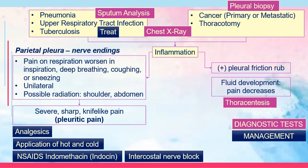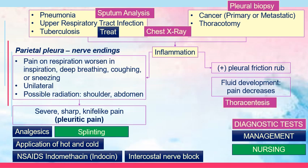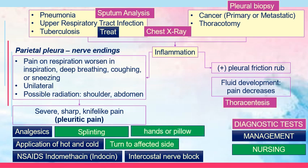Management includes treating underlying conditions such as pneumonia, respiratory tract infection, and tuberculosis so pleural inflammation resolves. Analgesics are given for pain. Application of hot and cold compress is recommended. NSAIDs such as indomethacin may help. Intercostal nerve block involves administering an anesthetic to the nerve supplying the pleura to sever pain transmission. For nursing management, educate the patient on splinting — turning to the affected side or placing a pillow across the chest with crossed hands to decrease pain during coughing.